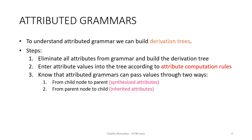In order to understand how attributed grammar works, we build derivation trees and then follow these steps. First, we ignore all attributes when building the tree. Second, we enter attribute values into the tree using the attribute computation rules. And third, we pass the values in two ways: from the child node to parent, which we call synthesized attributes, and from parent node to child, which we call inherited attributes.